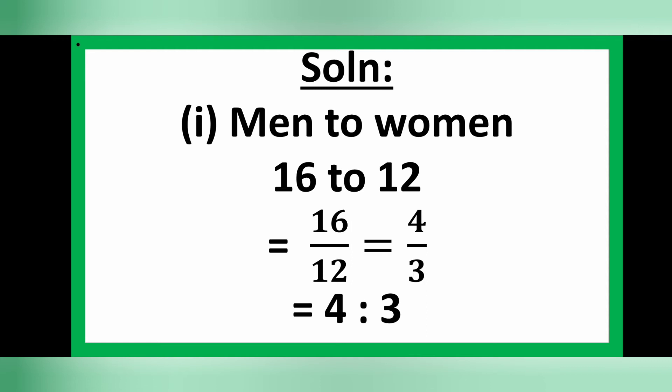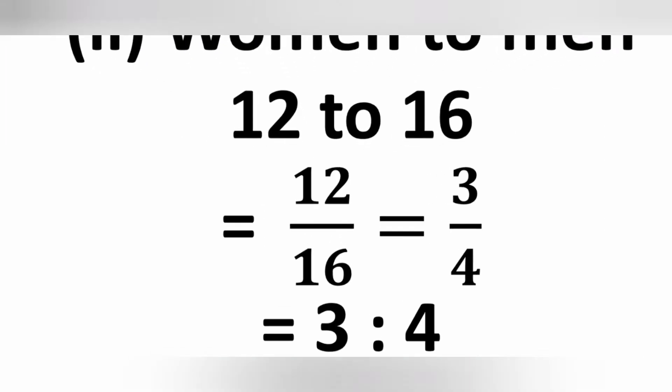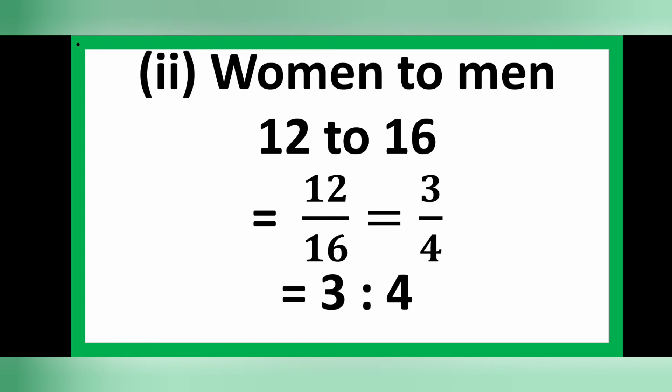Dividing both 16 and 12 by 4 gives 4 over 3. This implies that the ratio of men to women is 4 to 3.